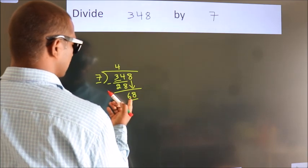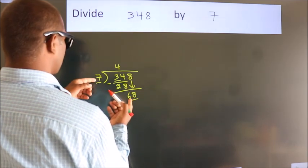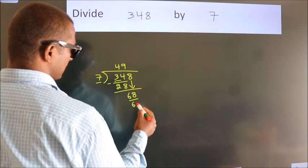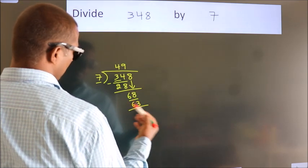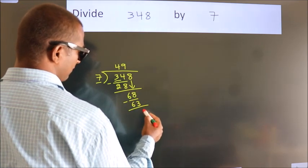A number close to 68 in the 7 table is 7 nines, 63. Now we subtract. We get 5.